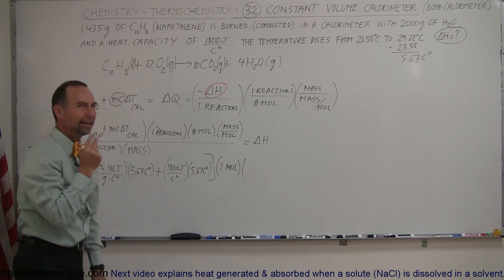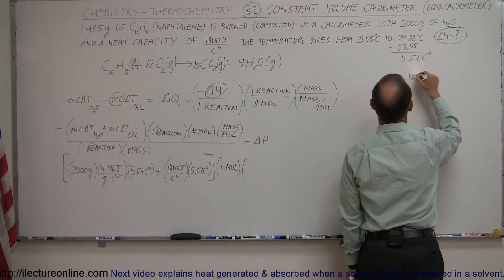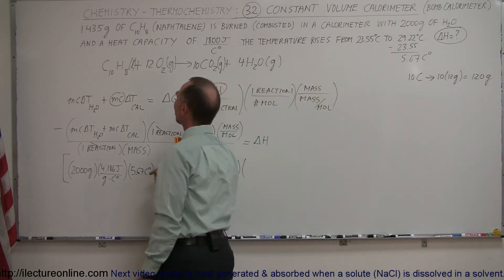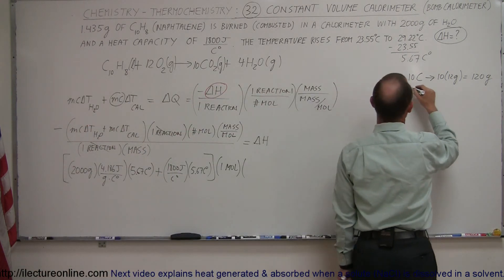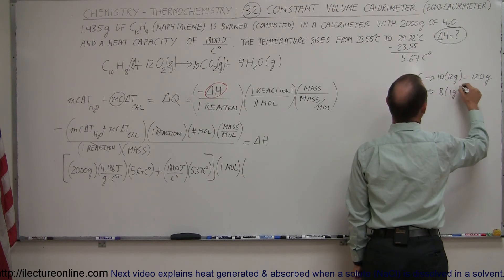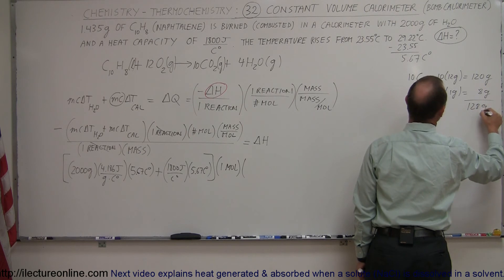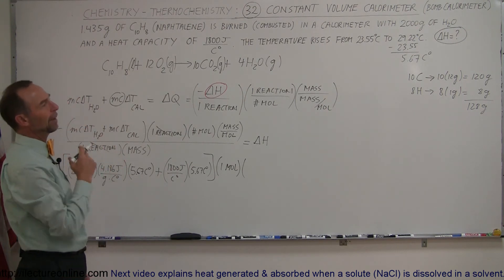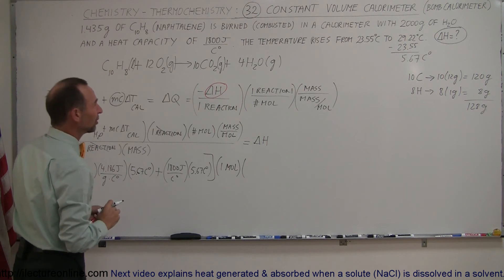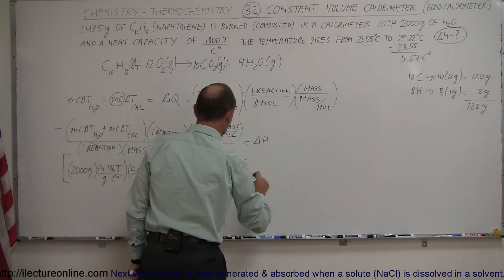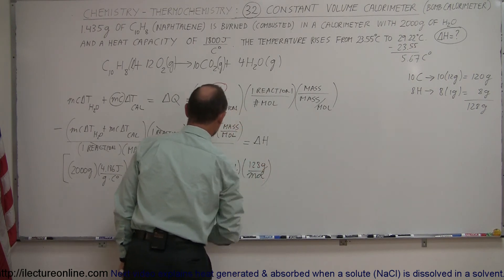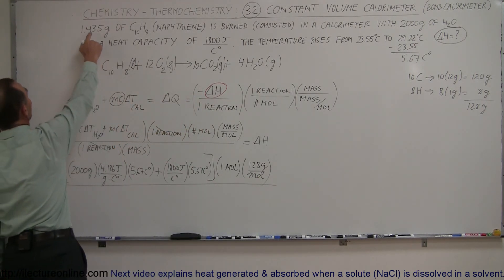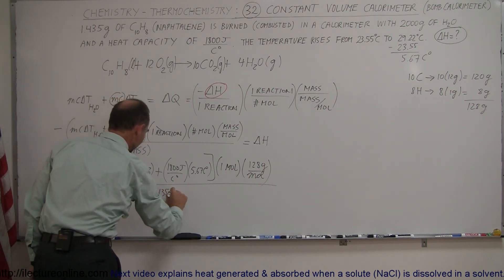We have 10 carbons and each carbon has a mass of 12 grams, so 10 times 12 grams, we'll round off to the nearest gram, which is 120 grams. Then we have 8 hydrogens, so 8 times 1 gram, that's 8 grams, for a total of 128 grams. We're rounding it off just a little bit. We know that the mass of hydrogen is slightly more than a gram and the mass of carbon is slightly more than 12 grams per mole because of the isotopes in carbon, but close enough. So we'll call this 128 grams per mole. Then we divide that by the mass, which is 1.435 grams.